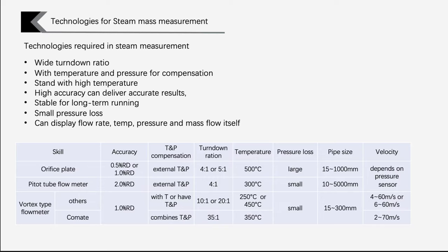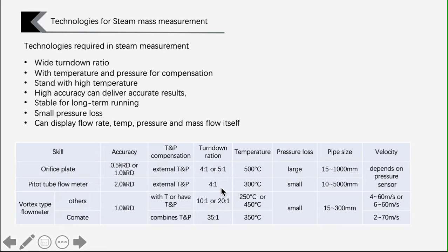and most importantly, combines temperature and pressure for density compensation. When the volume flow is corrected, the result will be accurate. Here is a table listing the most common technologies in steam system measurement. You can compare the specifications and find the most suitable model for your system.